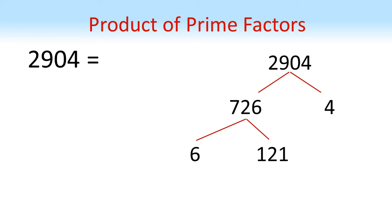726 is equal to 6 times 121. And 4 is equal to 2 times 2. Now they are prime, so let's circle them. But our left-hand side can keep going.